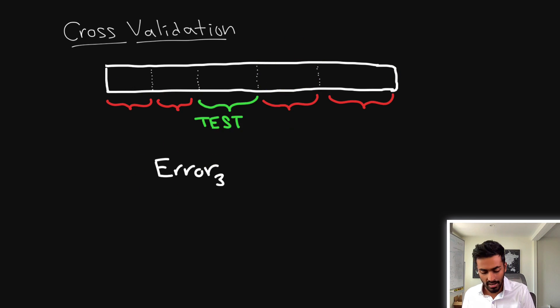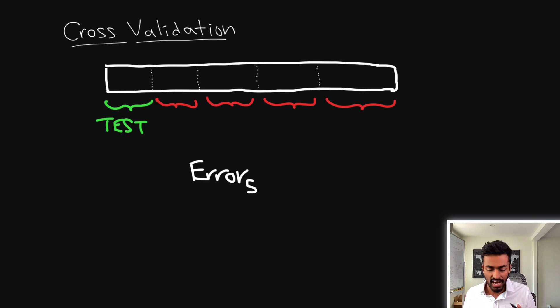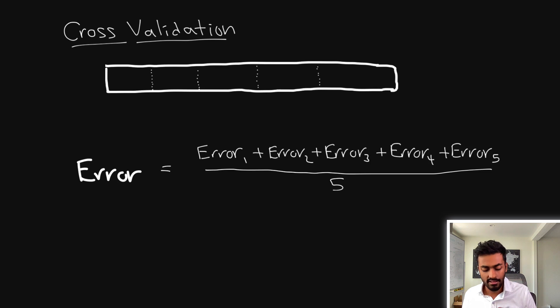And we repeat this process depending on the number of chunks that we decide. In this case it's five so we have five errors. And in the end the cross validation error is just going to be the mean of all of these errors. Now a neat thing that this provides over the holdout validation set is that in the case that the data set is small we now can use every single example for both training and evaluation.